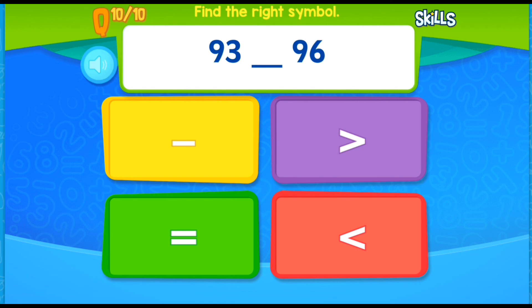So 93 and 96. So mummy, you say. So we can do 93 minus 96, 93 equals 96, 93 is larger than 96, or 93 is less than 96. 96, 93 is less.